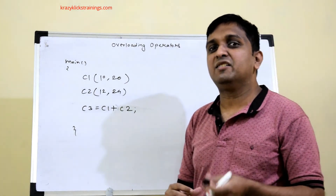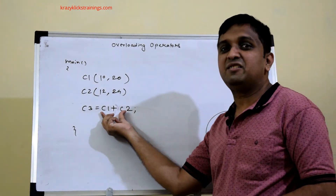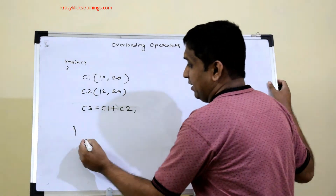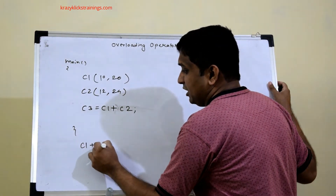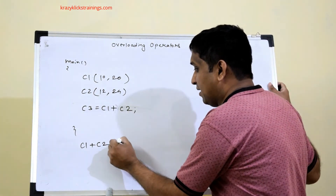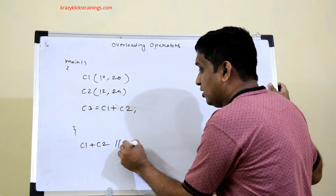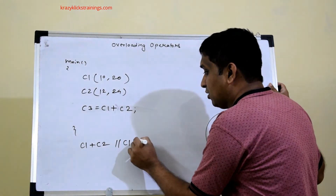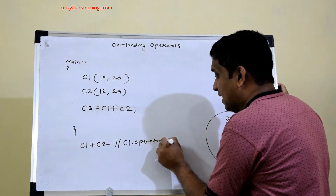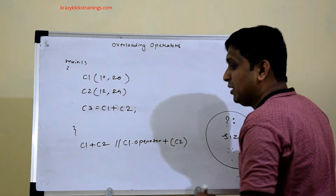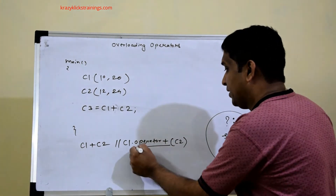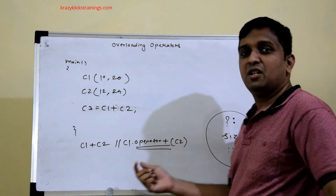We should understand how a statement like c1 + c2 is treated by the compiler. Since plus is a binary operator, the statement c1 + c2 is treated by the compiler as a function call: c1.operator+(c2), where c2 is the argument to the function. The name of the function is operator plus.